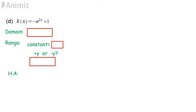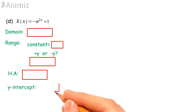What's the horizontal asymptote? The horizontal asymptote is... Last one. What's the y-intercept? The y-intercept is... Feel free to pause the video and answer the questions. After that, we can proceed to sketch the graph.